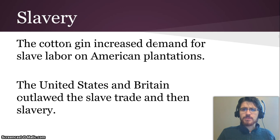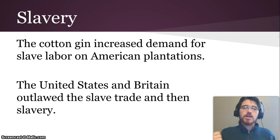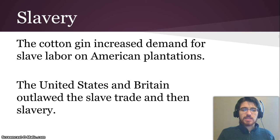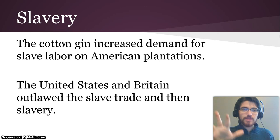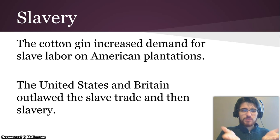Slavery was also affected in this time period. The cotton gin Eli Whitney created increased demand for slave labor, because it was much easier to get the seeds out of the cotton, which could then be made into cloth much more quickly — making it more profitable. This spread slavery throughout the United States because there was so much money in it and it was now so much easier to supply. People in the South expanded the use of slave labor really significantly. But by the end of the Industrial Revolution, the United States and Great Britain had outlawed the slave trade and then slavery itself altogether. We'll look more in-depth at how that works in class.